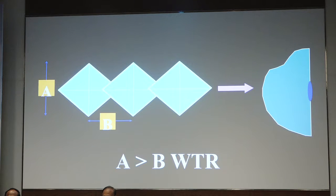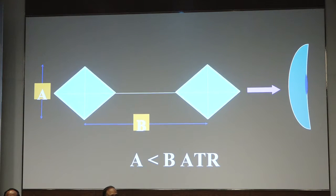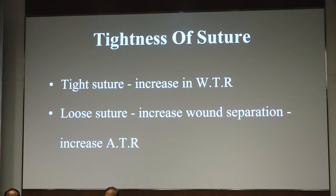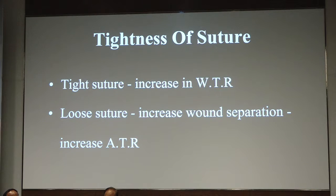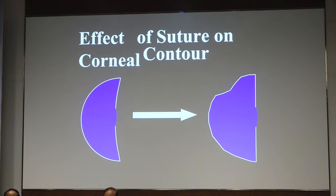When wound length is more than the width, you'll be inducing with-the-rule astigmatism. When sutures are widely placed, you get against-the-rule astigmatism. Tight sutures will cause with-the-rule astigmatism, and loose sutures will not oppose properly. This is how suture placement causes an effect when it is too tight.